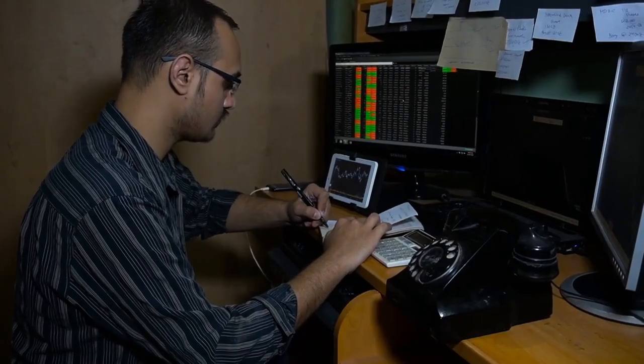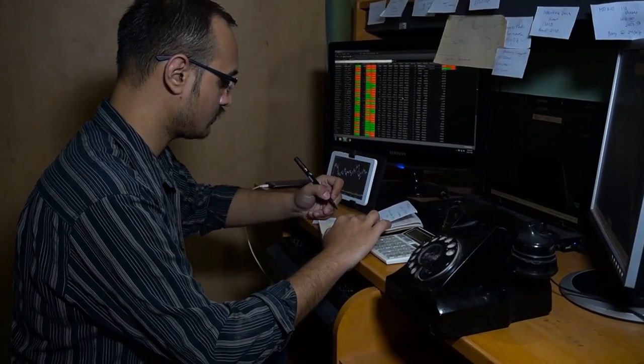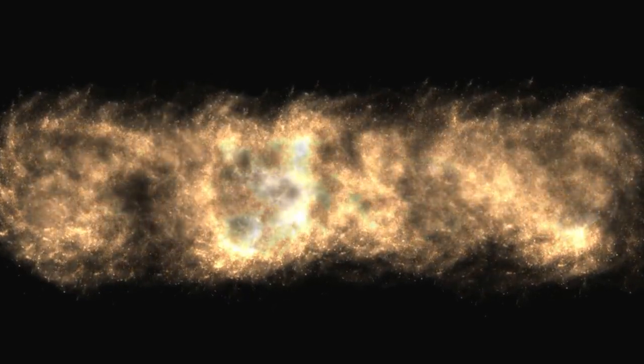Instead, staring back from the darkness was something that should not have been there: a galaxy, fully formed. Not a blur or a hazy blob, but a complex rotating system of stars, complete with spiral arms and even a monstrous black hole at its heart. Not just present, thriving, and it wasn't a one-off.